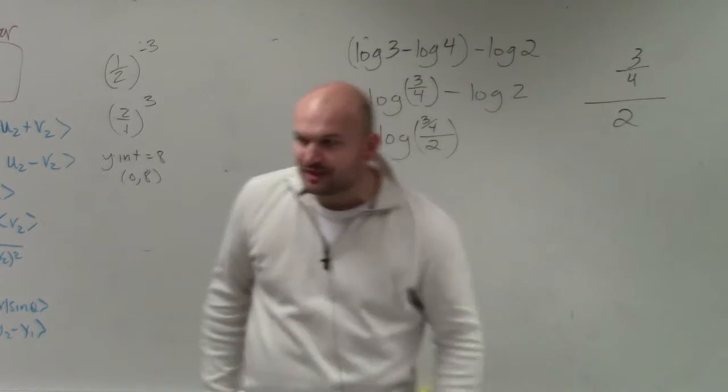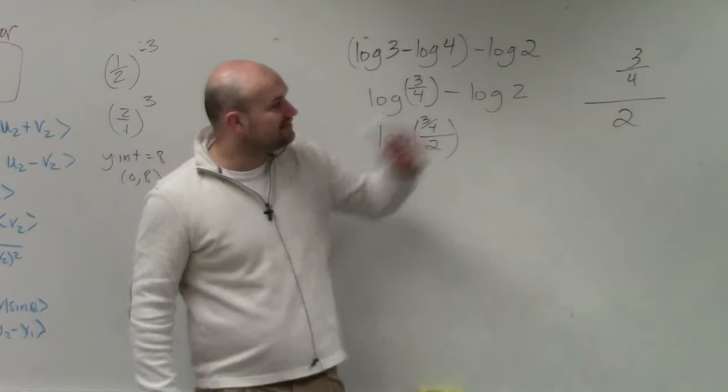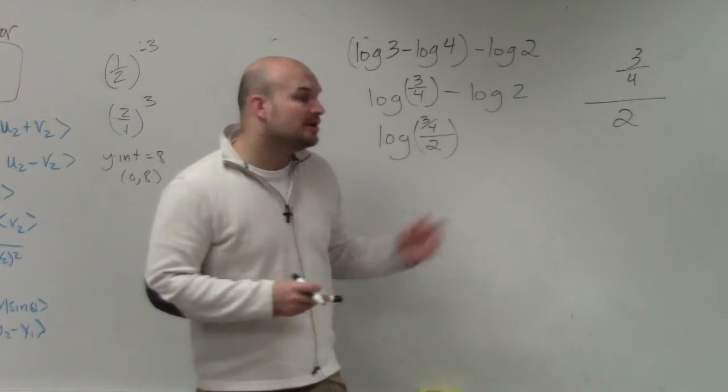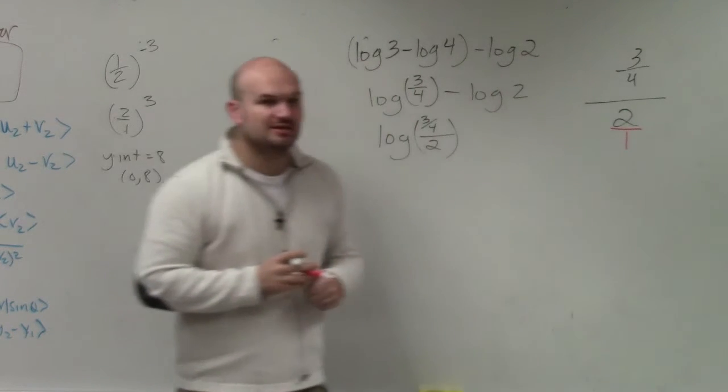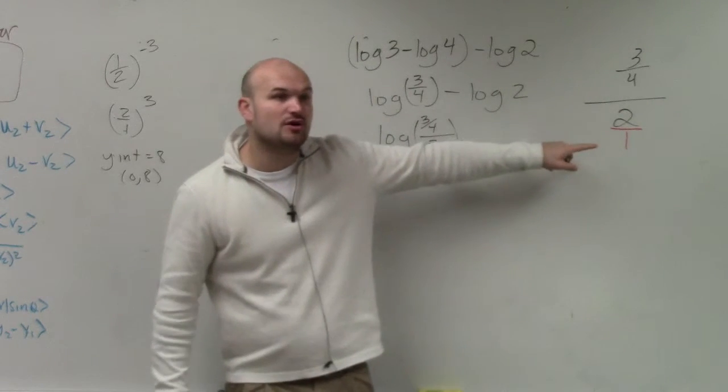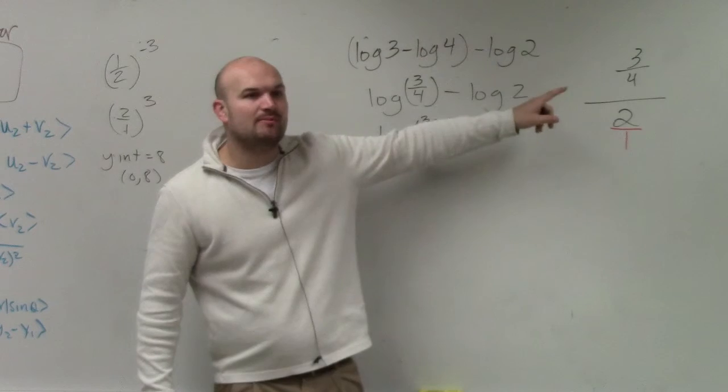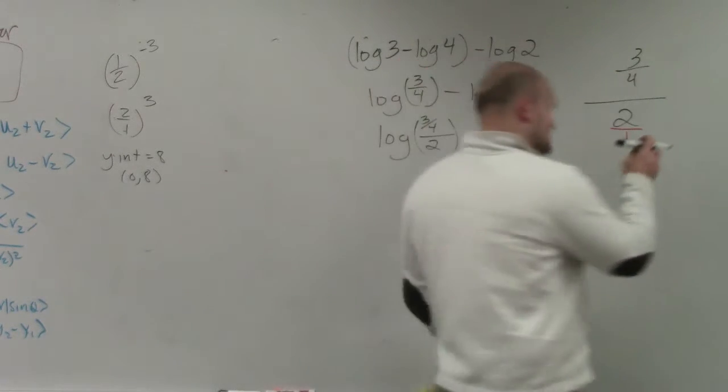If you guys remember, what I've showed previously is when you want to simplify 3 fourths divided by 2, what you need to do is rewrite this as a fraction. And then, to get rid of this 2 over 1 in the denominator, we can multiply by the reciprocal.